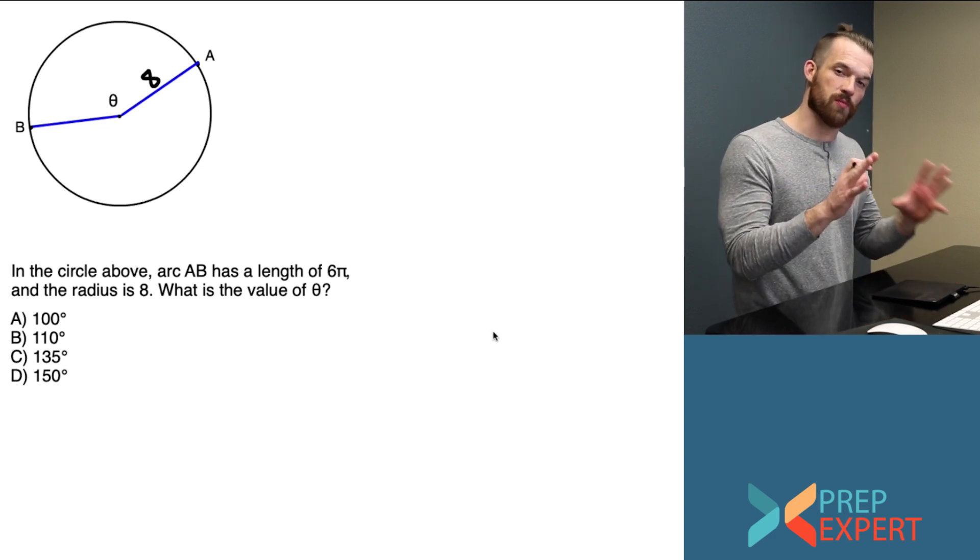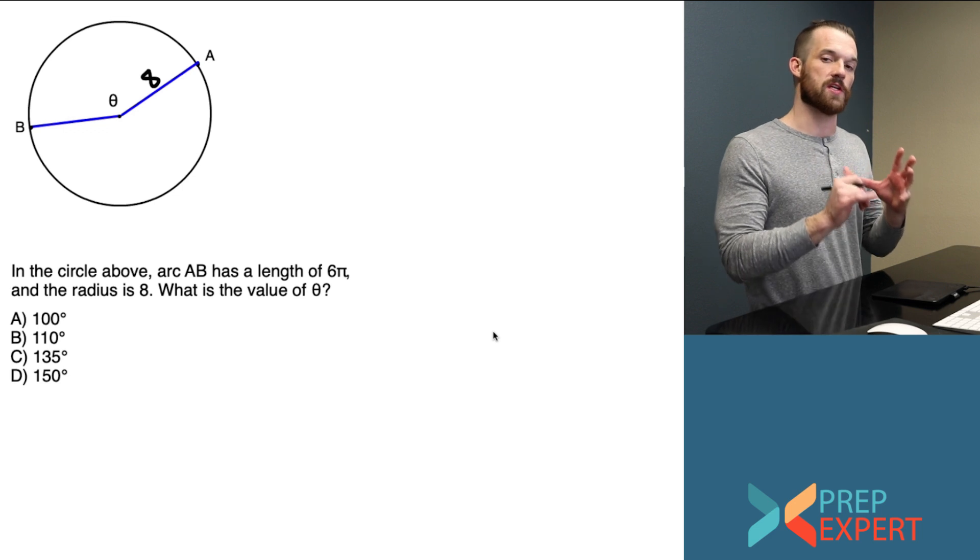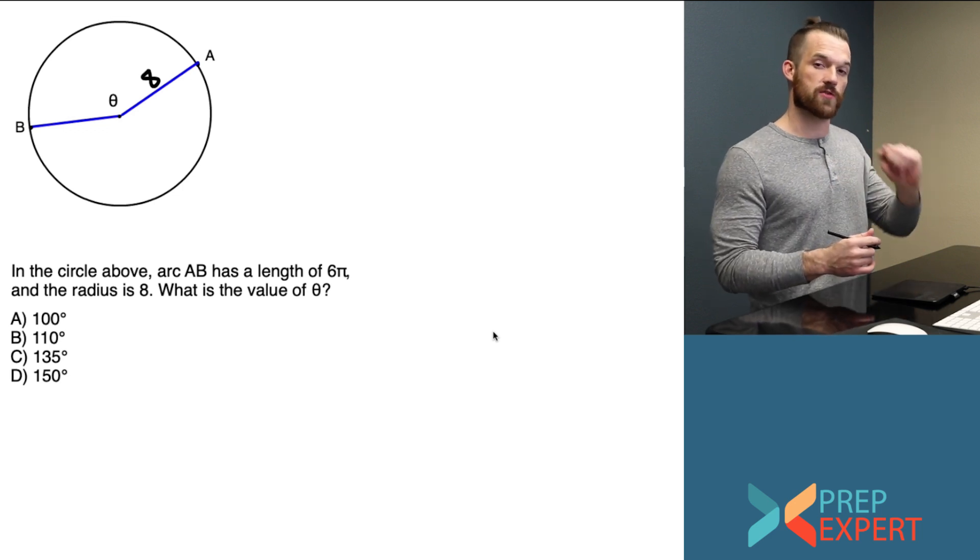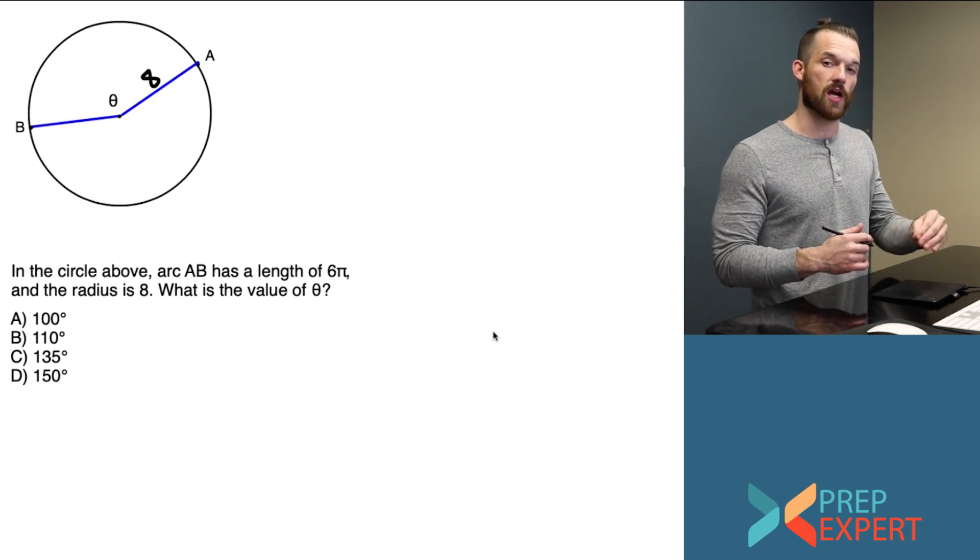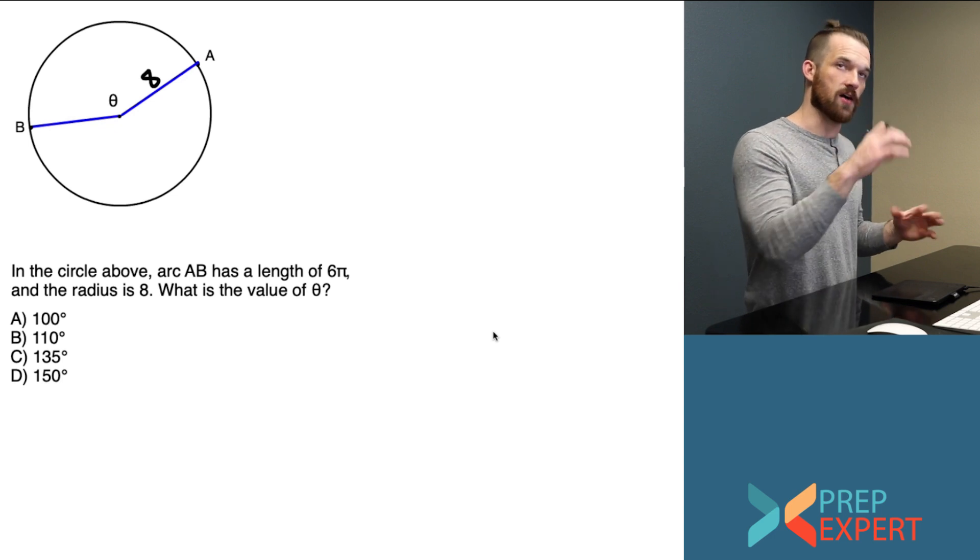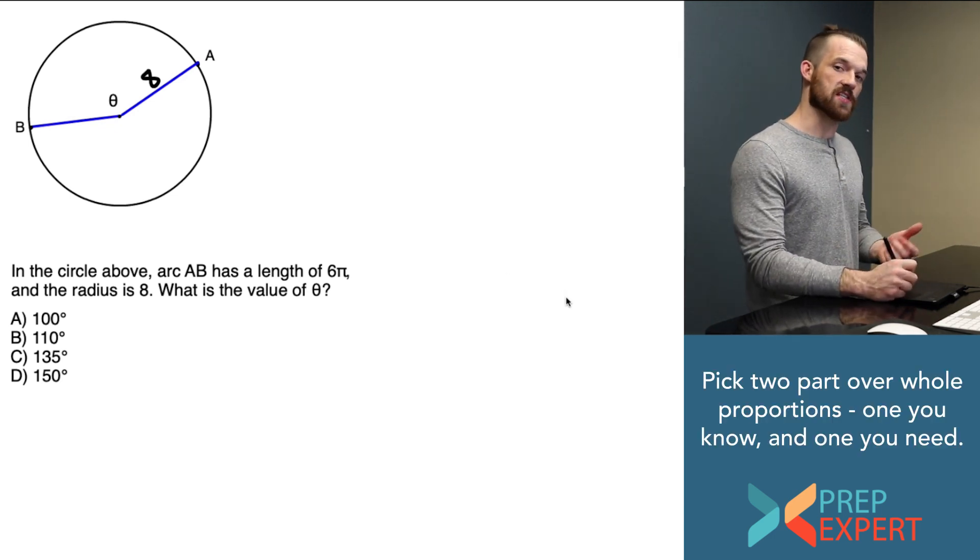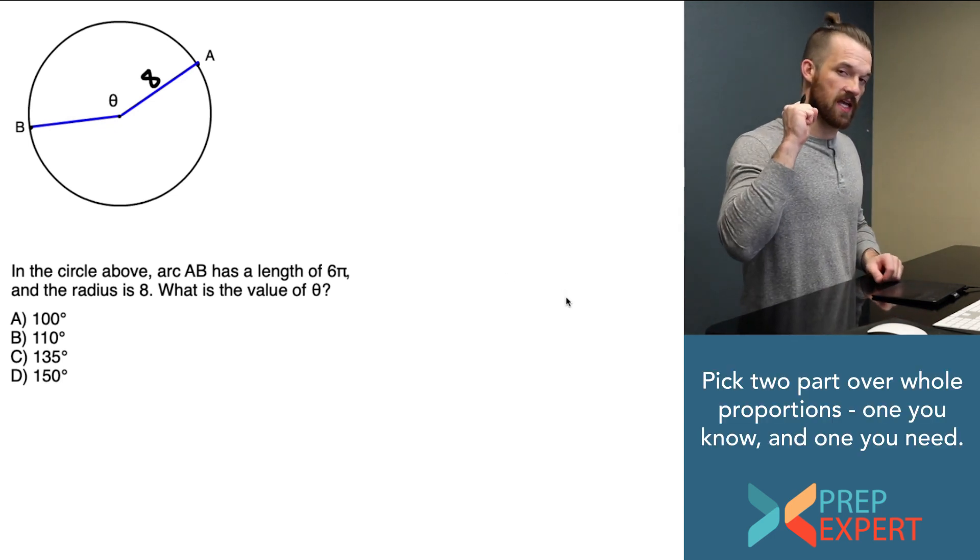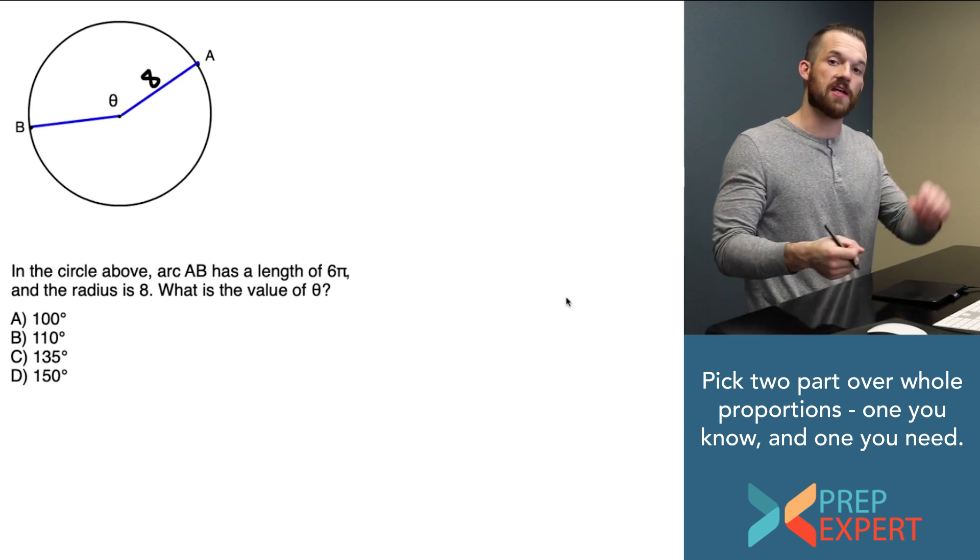Now, what I'm going to do is pick two of the three proportions that we looked at on the previous page. We looked at arc length over circumference, area of the sector over area of the circle, and theta over 360. In this case, I want to make sure that I pick the one that they asked me to solve for and another one that I can complete based on what they've told me.